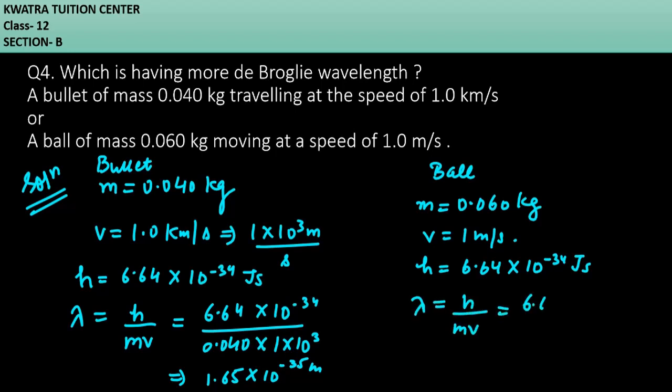H is known, which is 6.64 into 10 raised to power minus 34, divided by mass, mass is 0.060, V is 1. Now you can divide it and you will get approximate answer as 1.1 into 10 raised to power minus 32 meter in standard form.